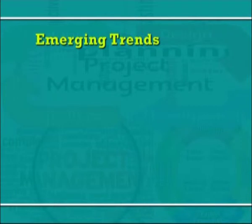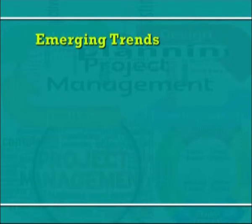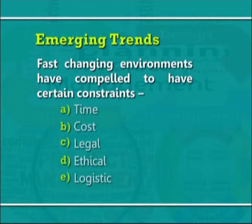We need to understand that the earlier project cycle phases which you just saw were practiced in earlier days, but today in most of the sectors and in almost all the projects, new project life cycle models are being followed. Emerging trends — modern projects differ from those of the past. The fast-changing environment has compelled certain constraints in the projects like time, cost, legal, ethical, and logistic. All this has resulted in risky environments, financial constraints and changing technology at a rapid pace. These new developments demand control on changes and the project simultaneously at all times.